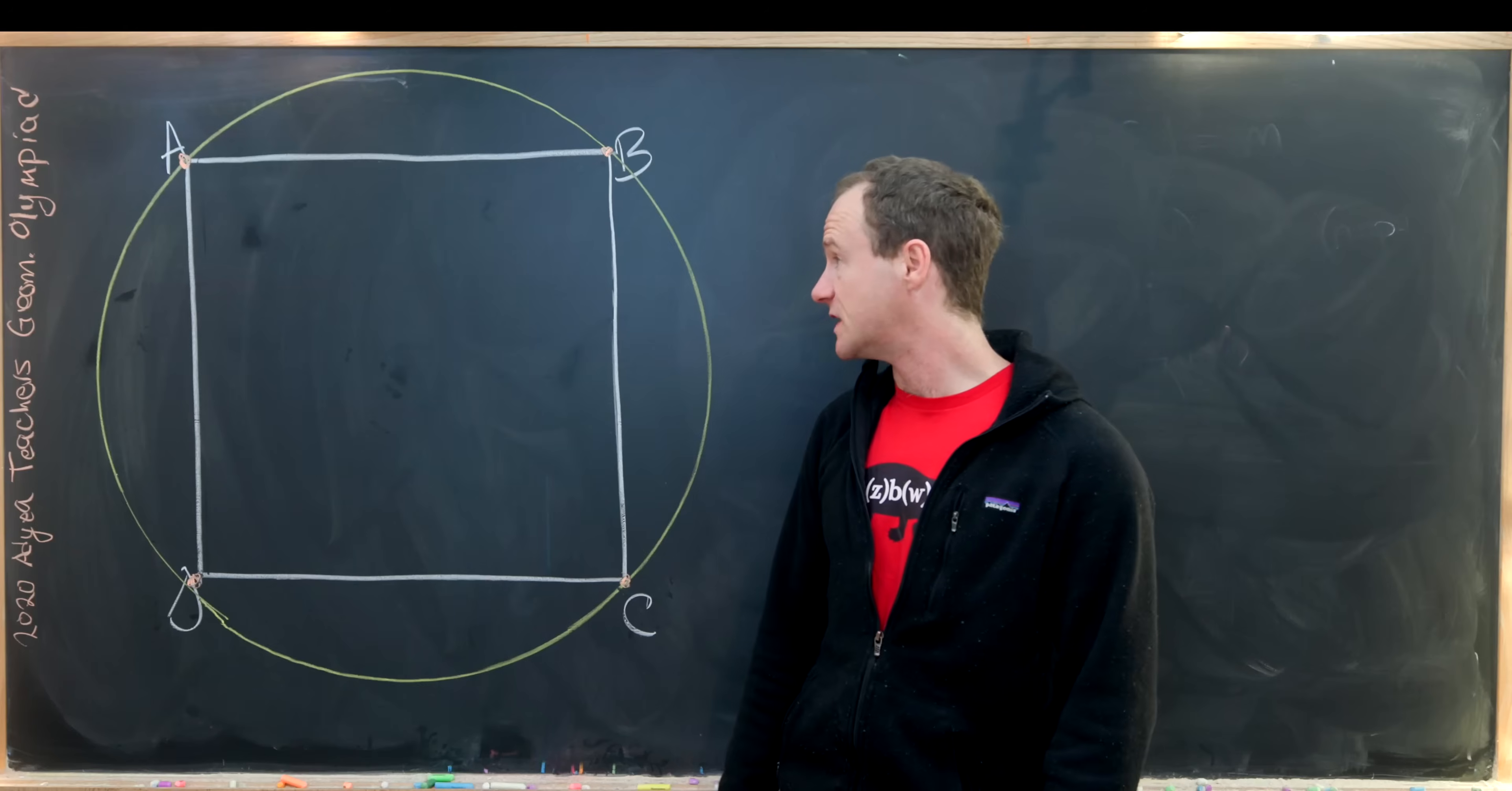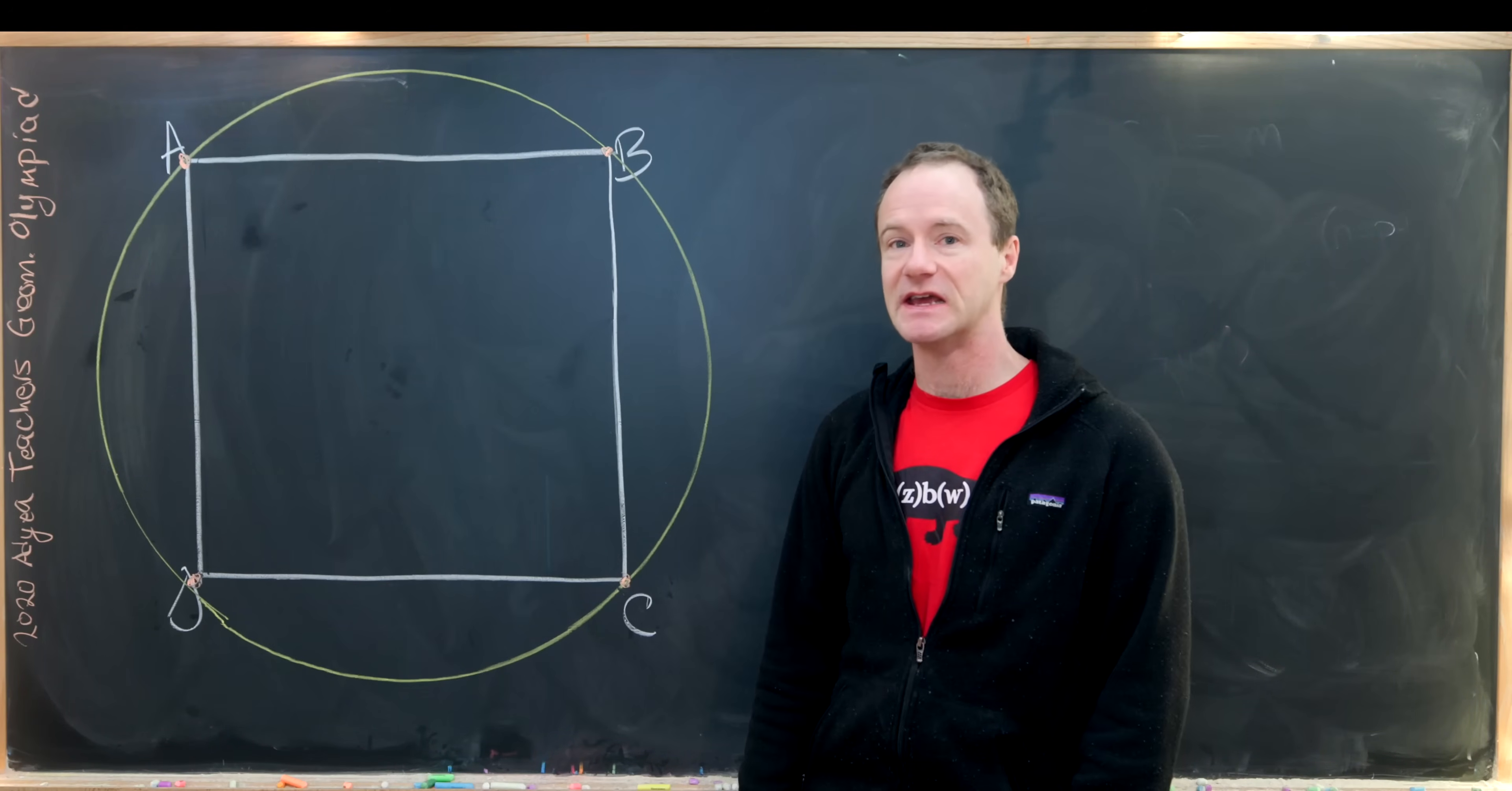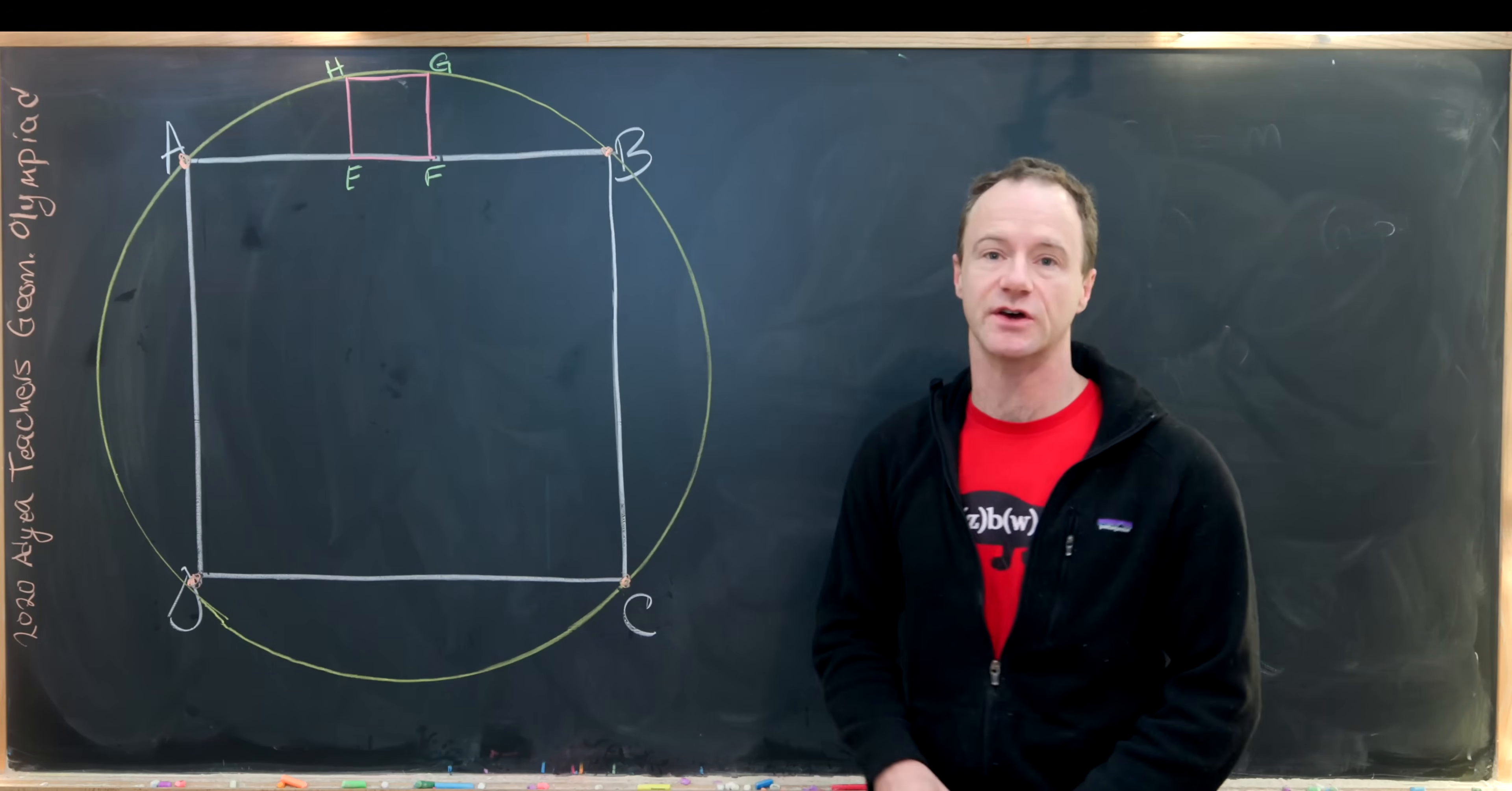And they're chosen so that we make a square up there and that square will be labeled E, F, G, H. So let's get that drawn. So that's good.